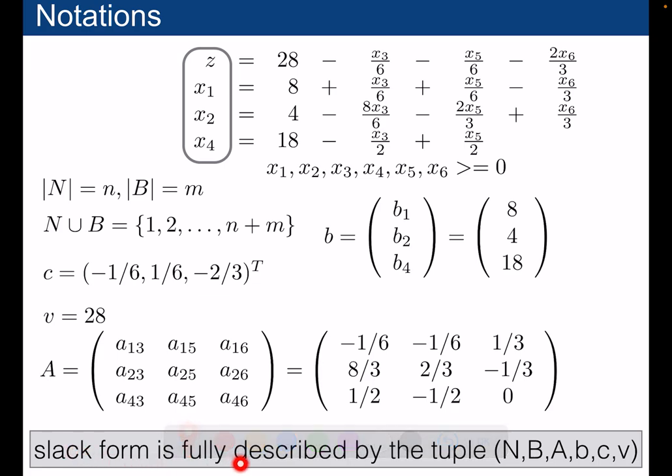And so my slack form is fully described by the tuple n, b, A, b, small b, small c, small v.